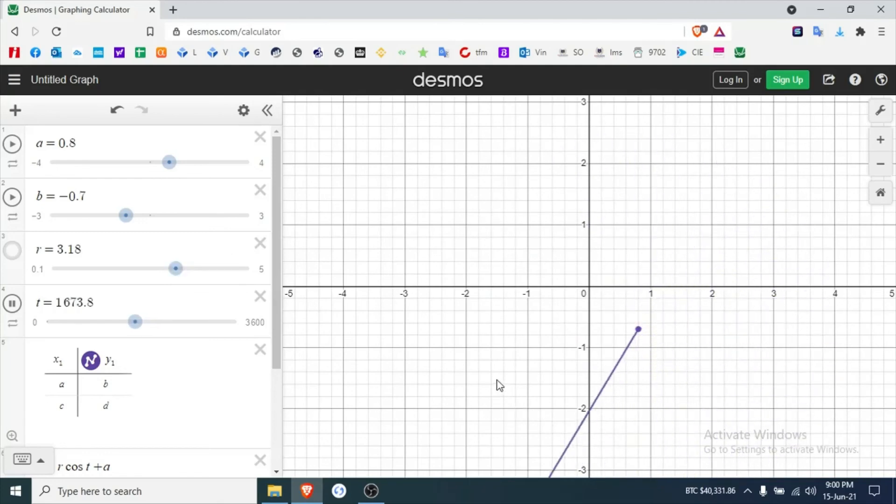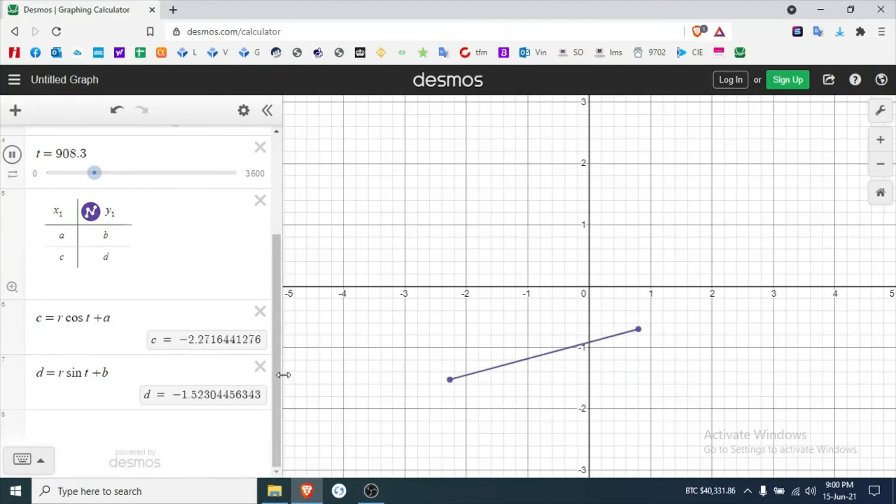That gives you a really good visual sense of where the formula V equals omega R comes from, or tangential velocity equals the angular velocity in radians per second times the radius. So there you go, a rotating vector with the origin anywhere you choose.